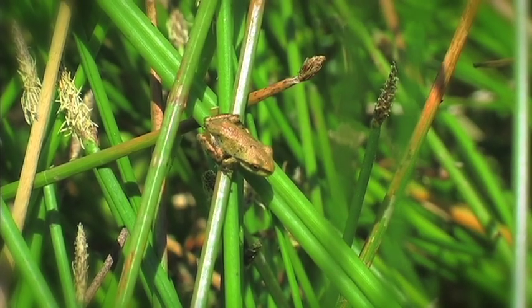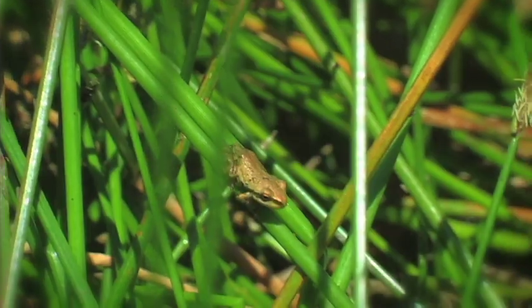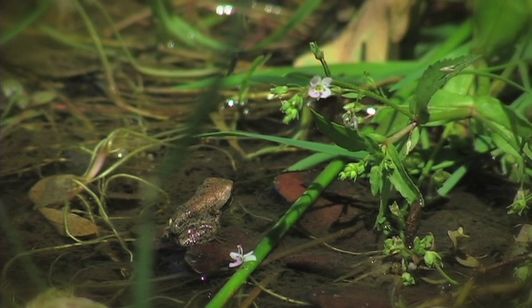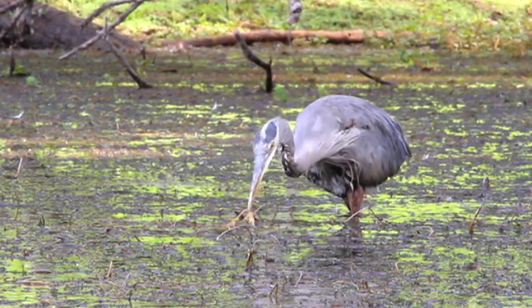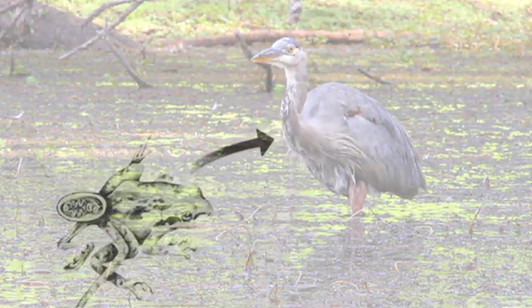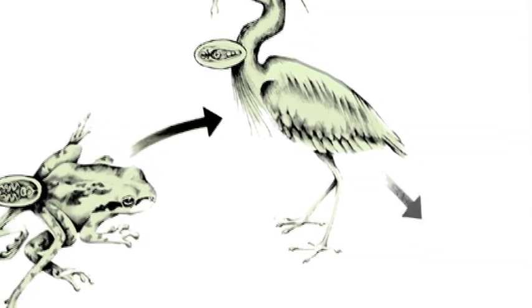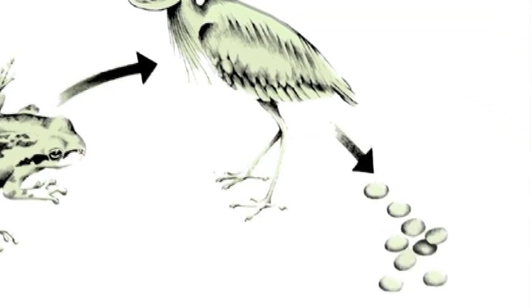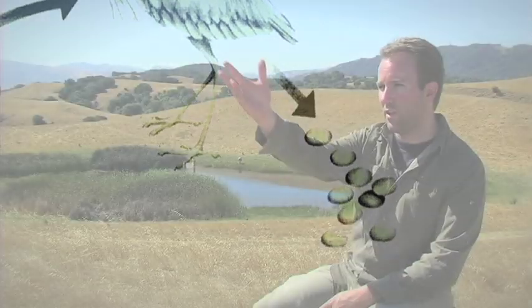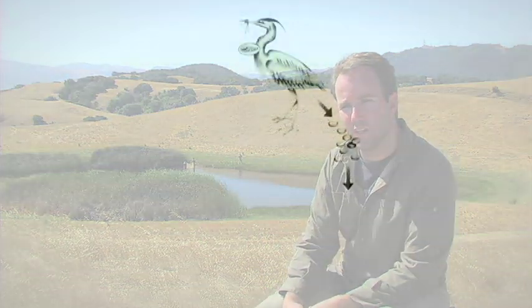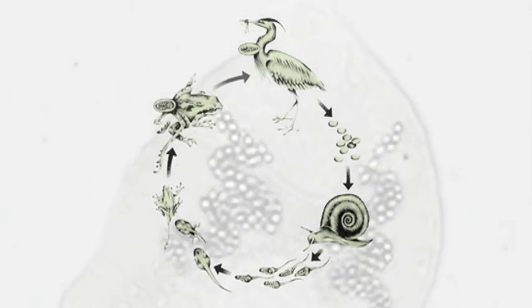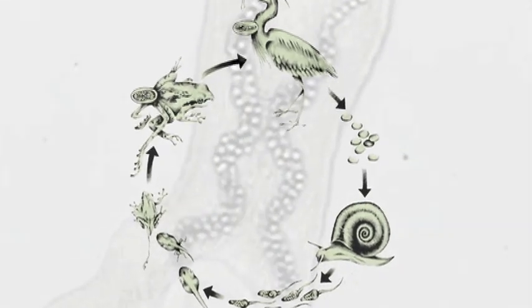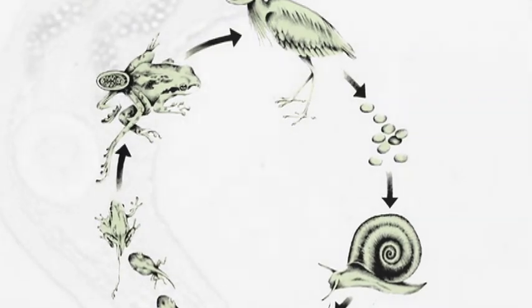The parasites wait for the tadpole to eventually metamorphose into a frog, and then those frogs come onto land. These deformed frogs in particular are going to be easy pickings for birds, and those birds themselves become infected. Once infected, the bird can release parasite eggs back into the pond through its feces, or fly out to other ponds in the area and spread the parasite there as well. The idea that this tiny microscopic worm can manipulate all of these other species in an ecosystem to its own benefit is humbling and fascinating at the same time.